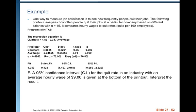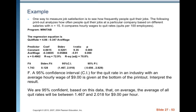A 95% confidence interval for the quit rate in an industry with an average hourly wage of $9 is also given at the bottom of the printout. We are 95% confident, based on this data, that on average the average of all quit rates will be between 1.467 and 2.018 for $9 per hour. That's a much smaller, much more narrow interval for the average of all quit rates versus an individual quit rate.